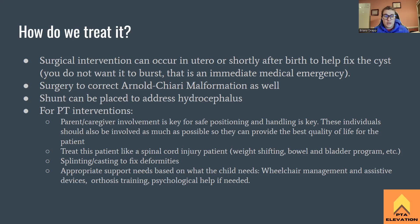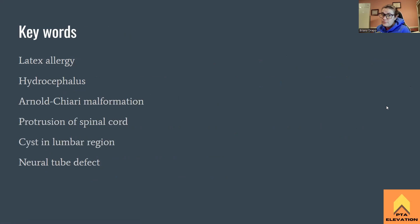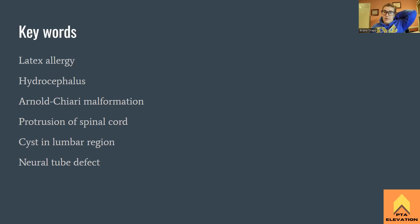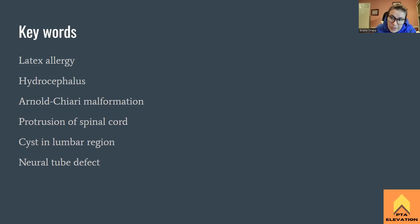Key words to remember: latex allergy, hydrocephalus in about 90% of cases, Arnold Chiari malformation — usually associated with the hydrocephalus — protrusion of the spinal cord, and cyst in the lumbar region, which is where 75% of cases occur. This is due to a neural tube defect, and folic acid is the key preventive supplement. If you see these words on the exam and they're asking about a specific type of spina bifida, it's probably myelomeningocele.